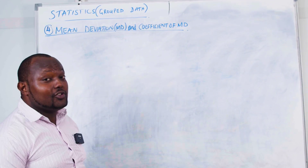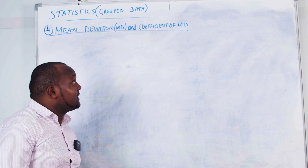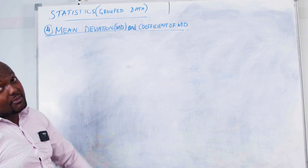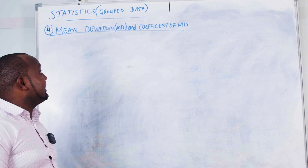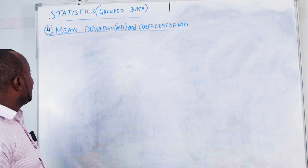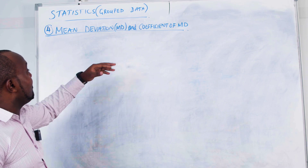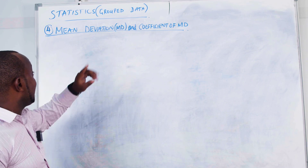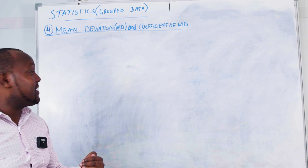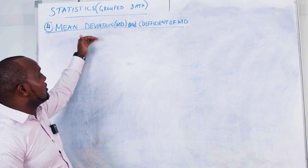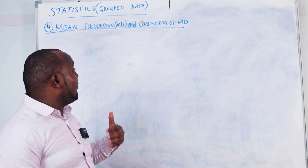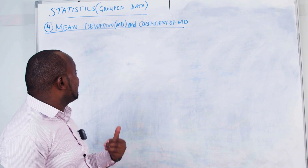In this case we are looking at statistics, specifically group data. All the videos of ungroup data are there. For group data, this is our fourth video, and this time we are looking at how we calculate mean deviation and the coefficient of mean deviation.